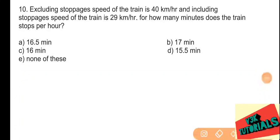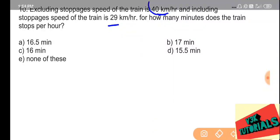Problem number ten: excluding stoppages, speed of the train is 40 kilometers per hour, and including stoppages, speed is 29 kilometers per hour. For how many minutes does the train stop per hour? Without stoppages the speed is 40 km/h; with stoppages it reduces to 29 km/h. Due to stoppages, the train covers 40 minus 29 equals 11 kilometers less per hour.